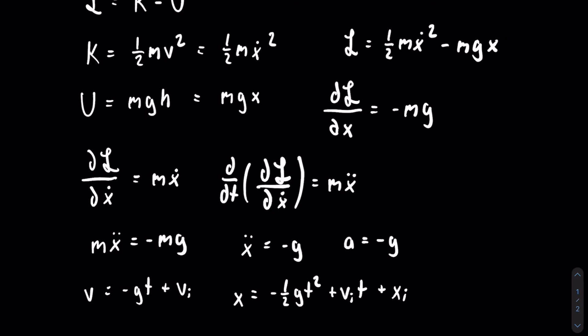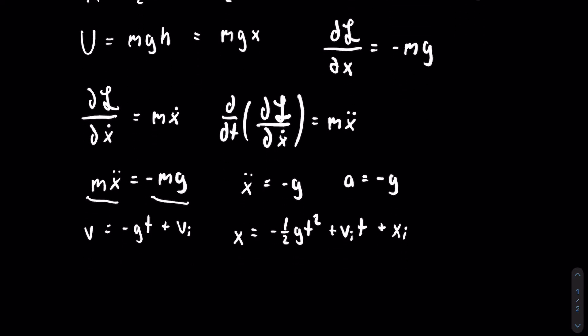Now, does this look familiar? It should because it is a kinematic equation. So I said before that the Lagrangian equation is a restatement of Newton's second law. I'm going to show that now. So let's go back to m x double dot is equal to negative m g. m x double dot is just m a. And negative m g is the gravitational force on the ball, which in this case is the net force. So we can call that f. And now if you want, you could write it the way it's typically written, which is f is equal to m a.